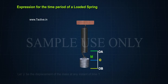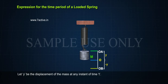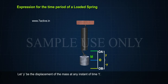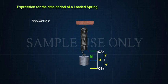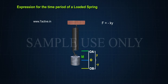Let Y be the displacement of the mass at any instant of time T. Then the restoring force F is given by F = -KY, where K is the force constant of the spring.